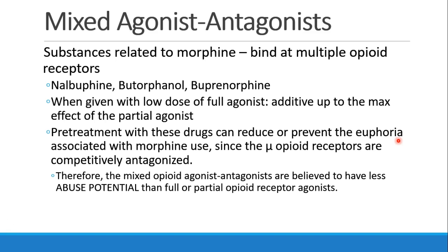Now let's move on to a different kind of opioid — the mixed agonist-antagonists. These are still substances related to morphine, and they usually bind at multiple different opioid receptors. Examples include nalbuphine, butorphanol, and buprenorphine. When given with a low dose of full agonist, these drugs are additive up to the maximum effect of the partial agonist — the ceiling effect. If you pretreat patients with these drugs, you may be able to reduce or prevent the euphoria associated with morphine use, because the mu opioid receptors are competitively antagonized. Therefore, mixed opioid agonist-antagonists have less abuse potential than full or partial opioid receptor agonists alone.